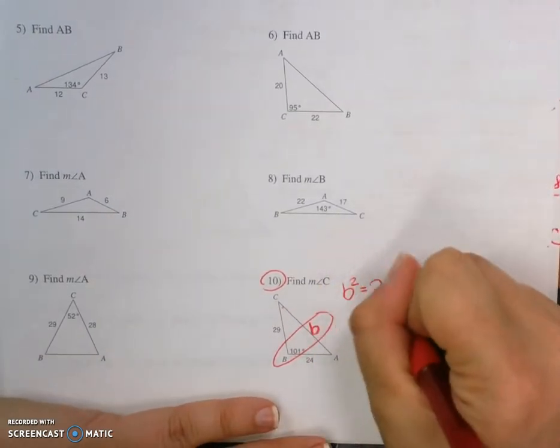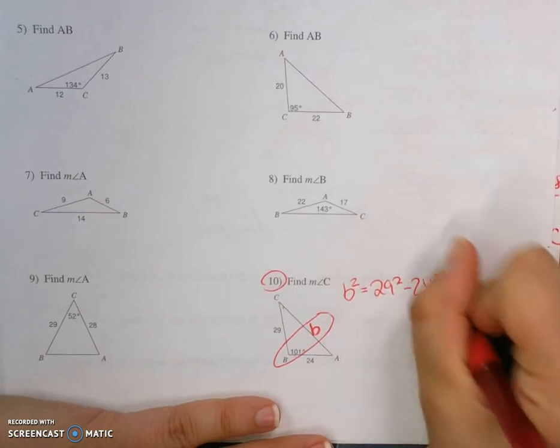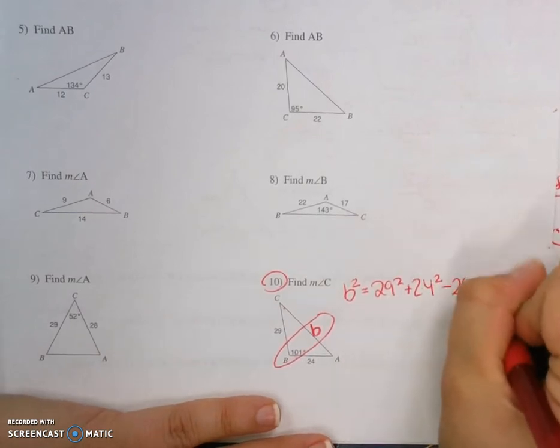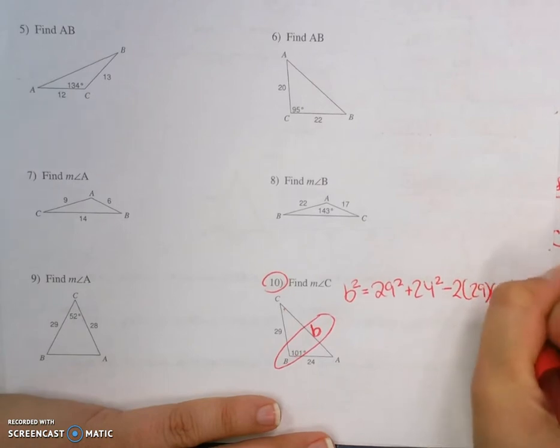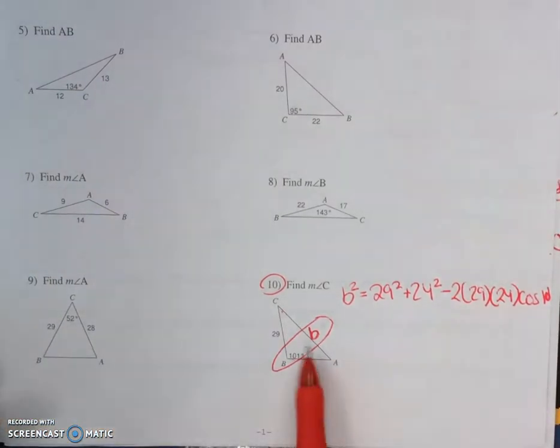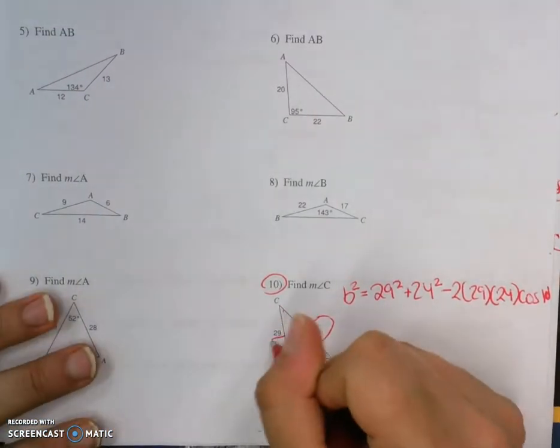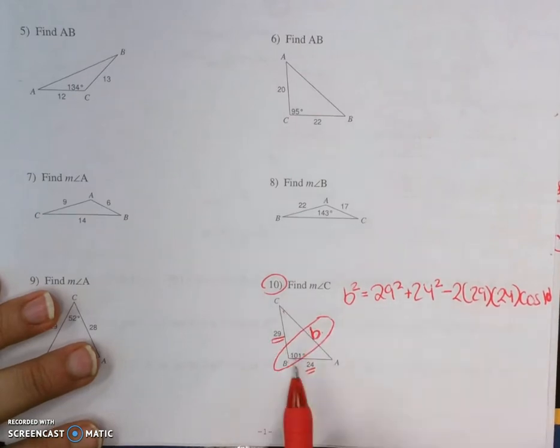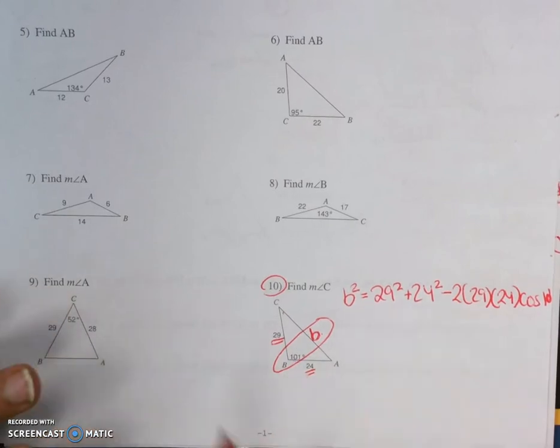B squared equals 29 squared plus 24 squared minus 2 times 29 times 24 cosine 101. And it's always that pattern that you end up having to use.